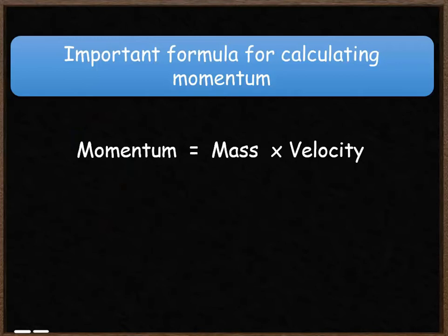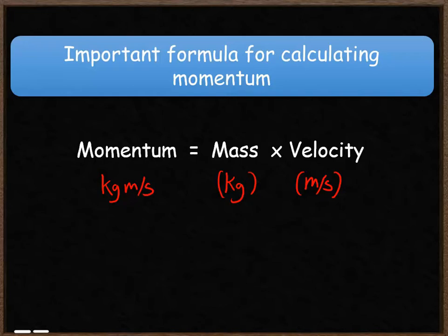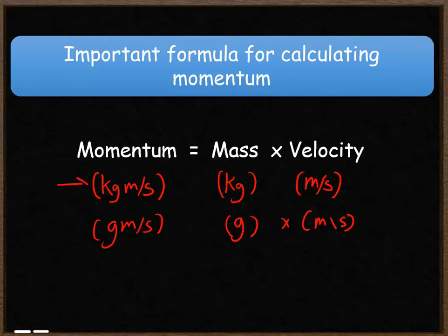We use mass in kilograms and velocity in meters per second, which means the unit for momentum is kilogram meters per second. If mass were in grams, the unit would be gram meters per second, but we tend to use kilogram meters per second — that's the one to use in these calculations.